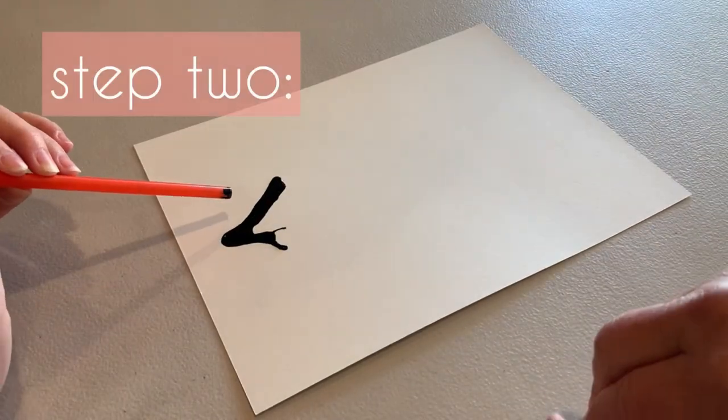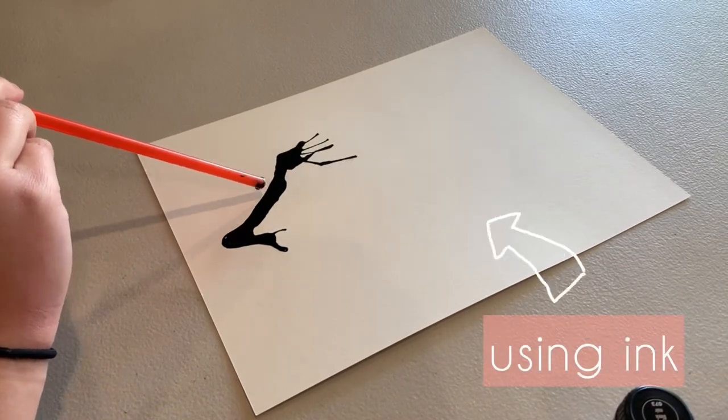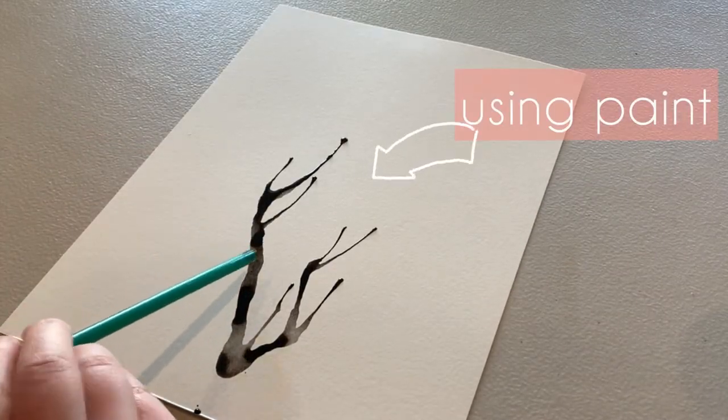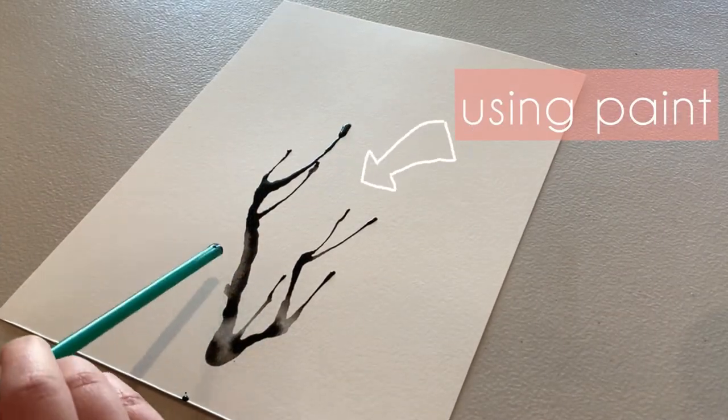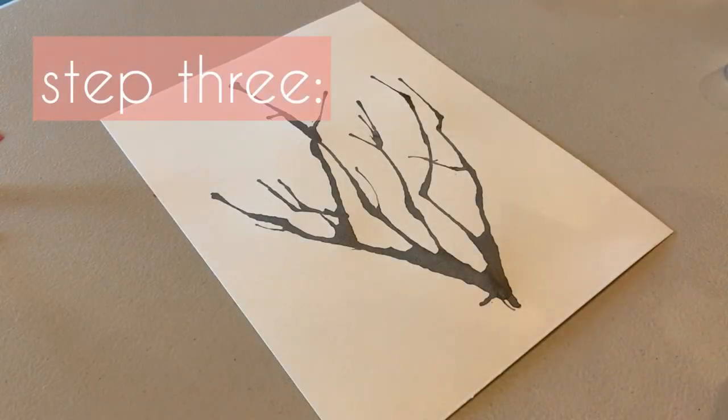With your drop of ink or paint on the paper, pick your straw and blow the ink up and out. This will create the branches of the tree. You can choose how many branches you want or how long or short you want them. Just have fun! Set your tree aside to dry.